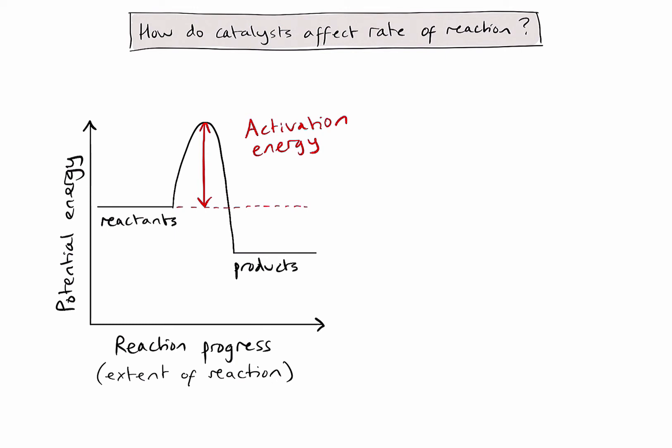So, how does this relate to catalysts? What a catalyst does is it decreases the activation energy required. As you can see, the blue line has a lower peak than the original black line, showing that there's a lower activation energy when we use a catalyst. There are a number of different ways a catalyst might do this, but for the IB, that's not important.